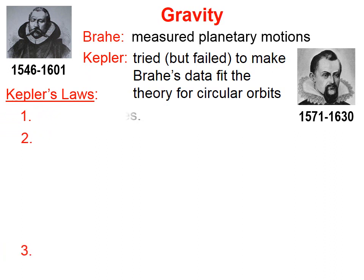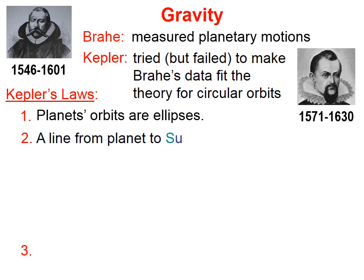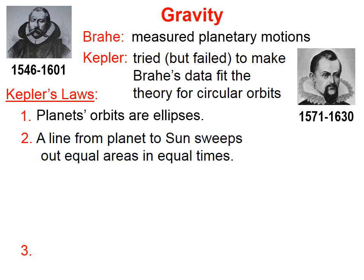So Kepler threw out that theory for circular orbits and said, let's suppose that the planets orbit the sun in elliptical paths rather than circular. And Brahe's data fit very nicely with that conjecture. It turned into Kepler's First Law of Planetary Motion: that planets orbit the sun in elliptical paths.